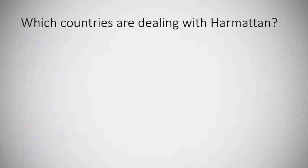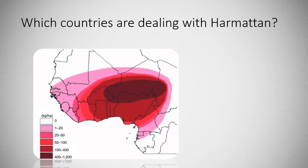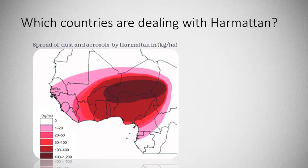So which countries are actually dealing with the harmattan? On this map the dark blue and red areas are most heavily affected by dust. Not every country is equally affected — mostly West African countries but also some Saharan countries.